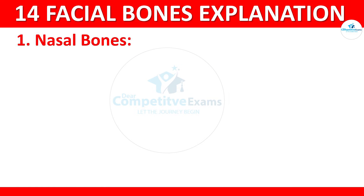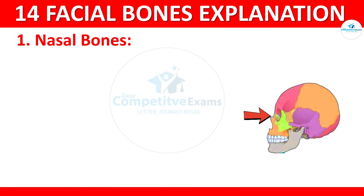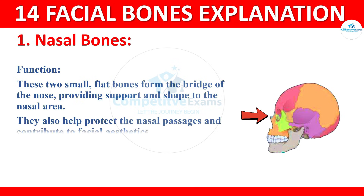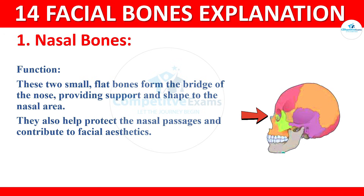The first one: nasal bones. The nasal bones are two small, flat bones from the bridge of the nose that provide support and shape to the nasal area. They also help to protect the nasal passages and contribute to facial aesthetics.